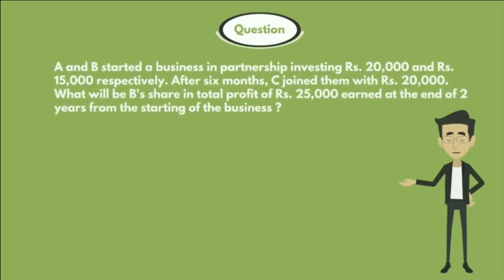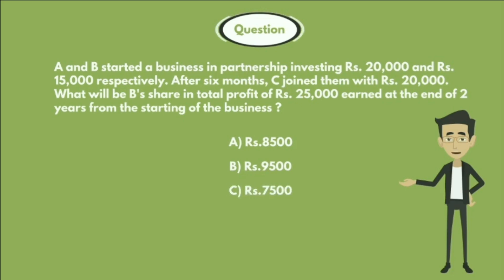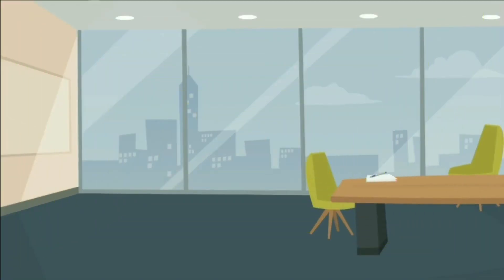A and B started a business in partnership investing 20,000 rupees and 15,000 rupees respectively. After six months, C joined them with 20,000 rupees. What will be B's share in the total profit of 25,000 rupees earned at the end of two years from the starting of the business? Options: A) 8,500 rupees, B) 9,500 rupees, C) 7,500 rupees, D) 6,500 rupees, E) None of these.